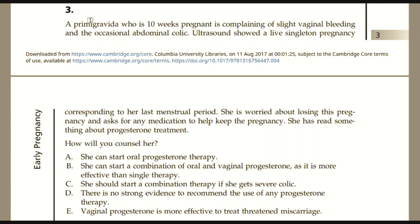Question number three: A primigravida who is eight weeks pregnant is complaining of slight vaginal bleeding and occasional abdominal colic. Ultrasound shows a live singleton pregnancy corresponding to her menstrual period. She is worried about losing the pregnancy and asks about progesterone therapy. Options: A) start oral progesterone, B) start combined oral and vaginal progesterone, C) start combination therapy if severe colic develops, D) no strong evidence to recommend any progesterone therapy, E) vaginal progesterone is more effective to treat threatened miscarriage.